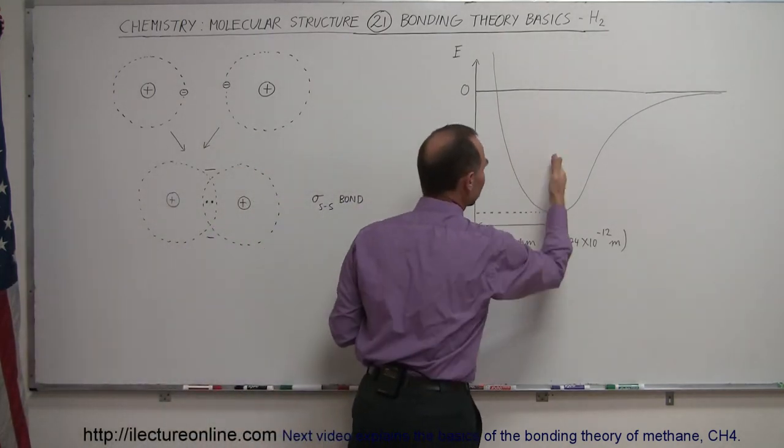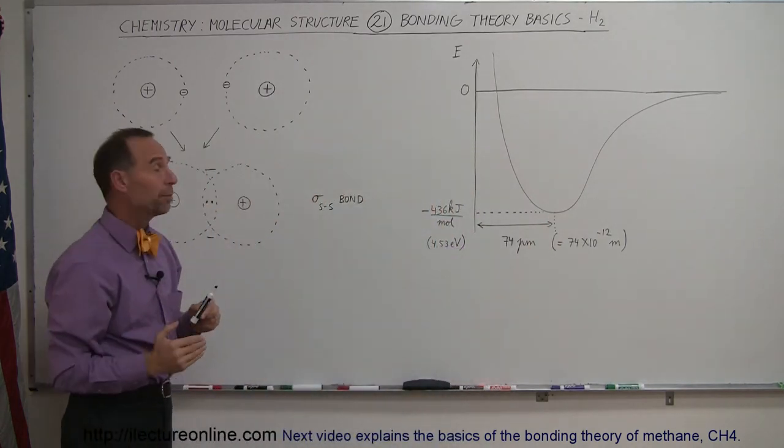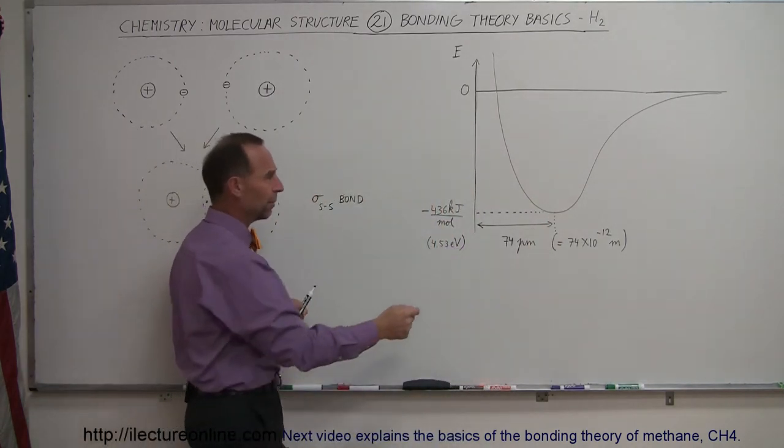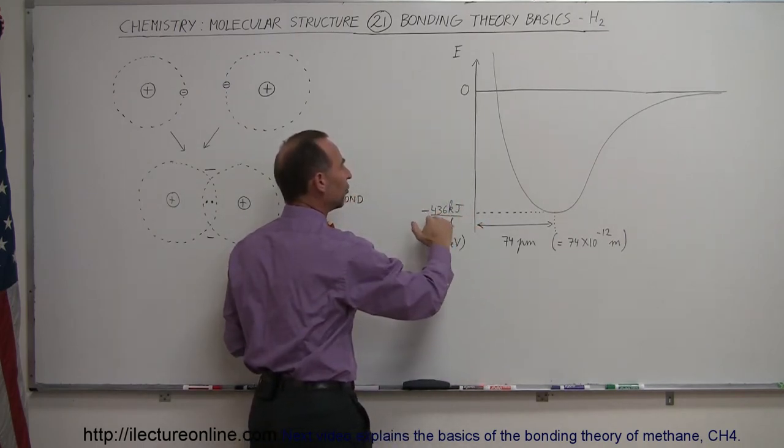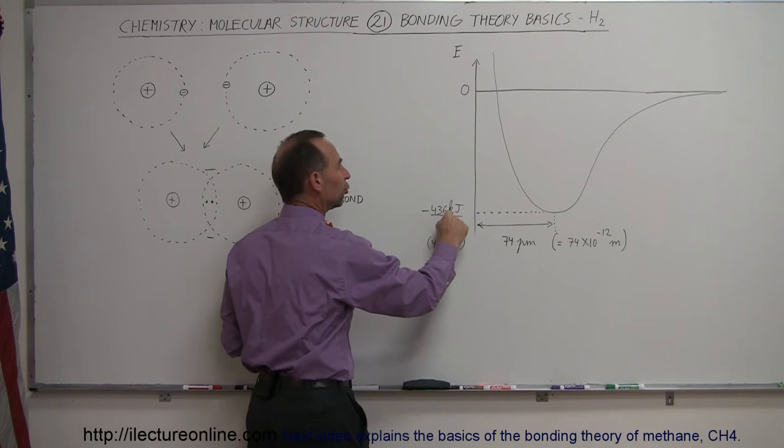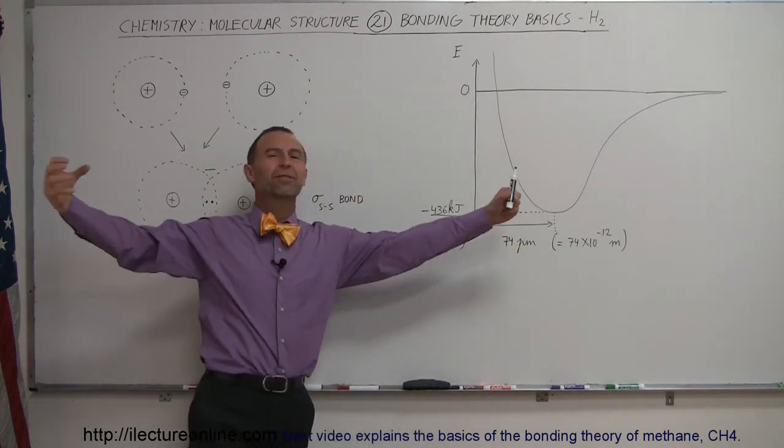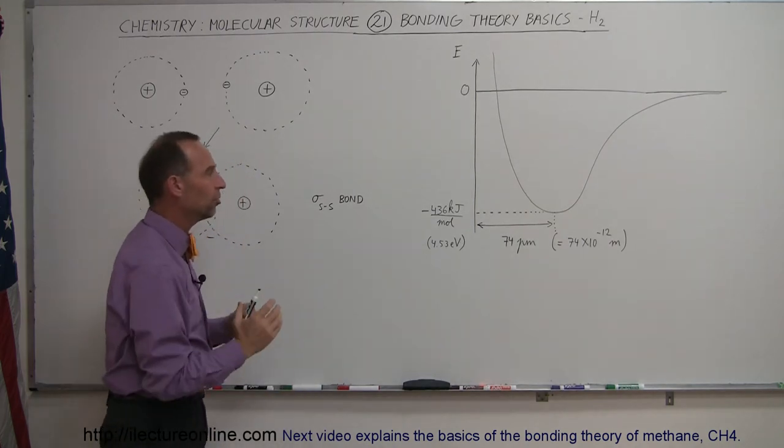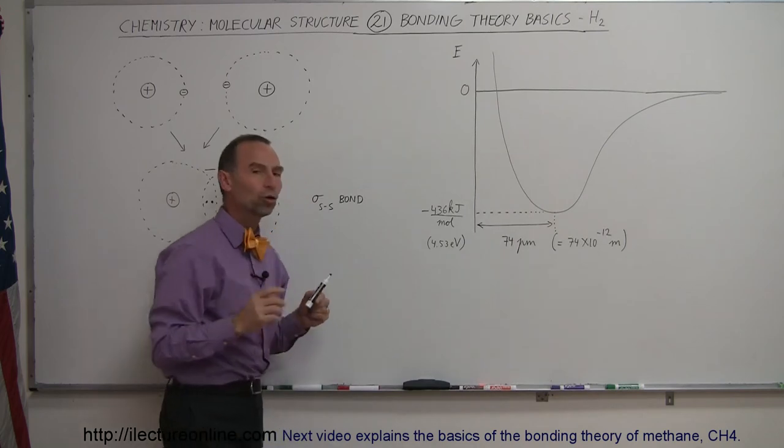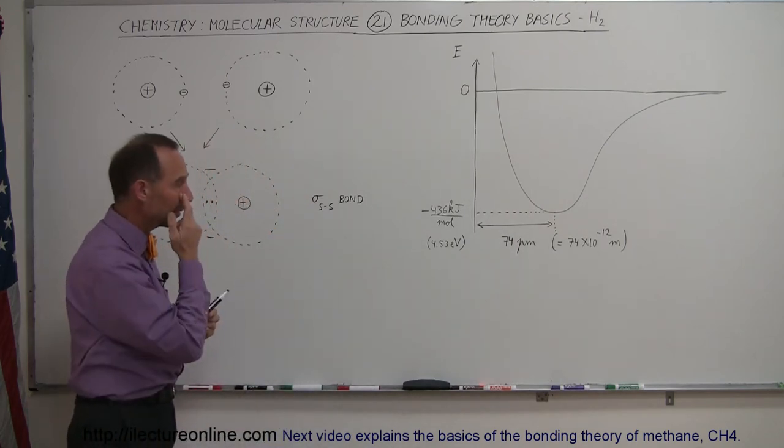The lowest energy state here will be obtained when the distance between the nuclei is exactly 74 picometers. The picometers are, of course, 10 to the minus 12 meters. So at that point, the energy is at minus 436 kilojoules per mole below zero. Zero is the energy level when they're infinitely far apart, so they fall into what we call a potential well, the lowest energy state at minus 436 kilojoules per mole, that would be per mole of hydrogen bonds.